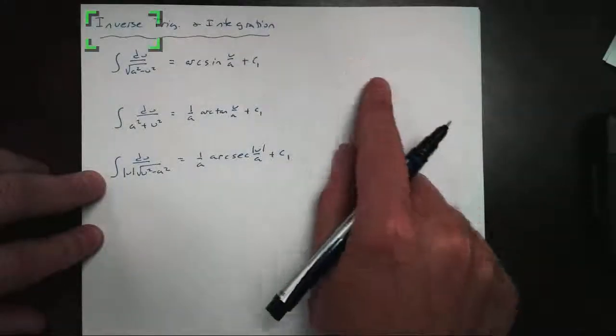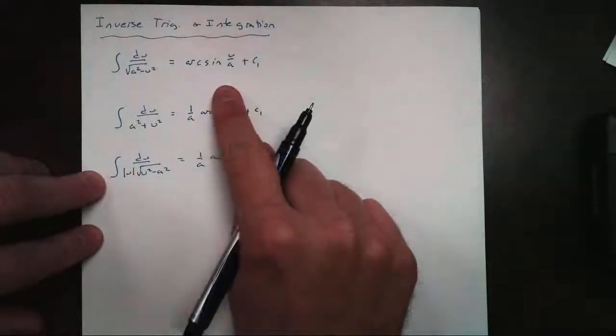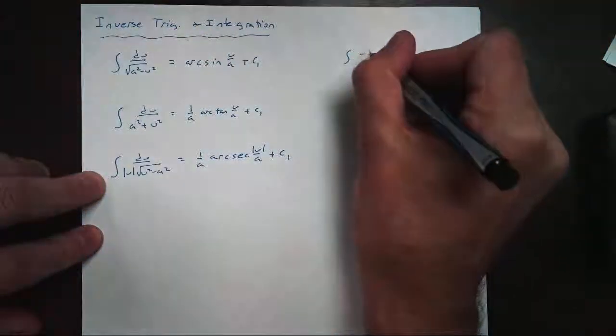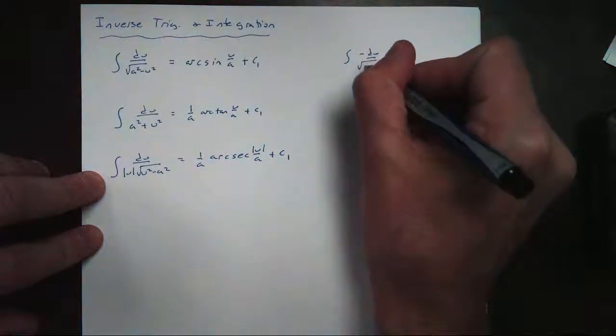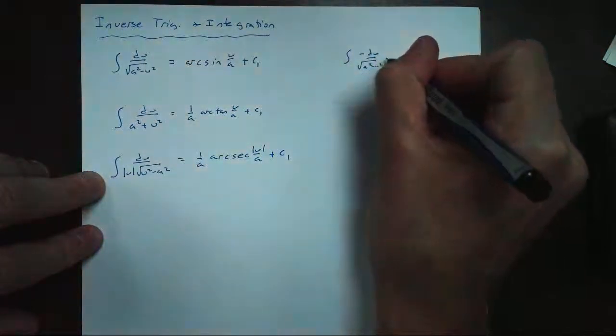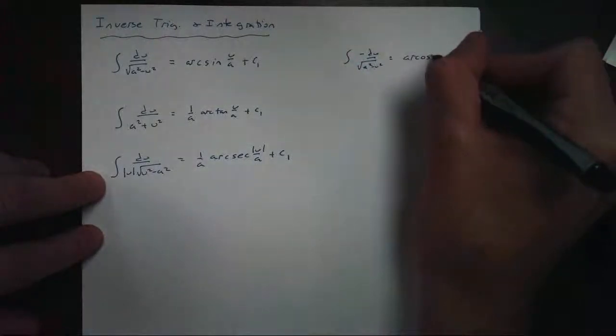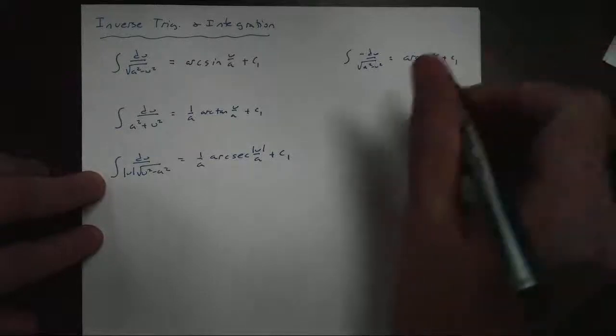Now, if you notice, we're not going to be worried about arc cosine. Because remember, if I had arc cosine, it would look like this: negative du over the square root of a squared minus u squared. This would be arc cosine of u over a plus c.